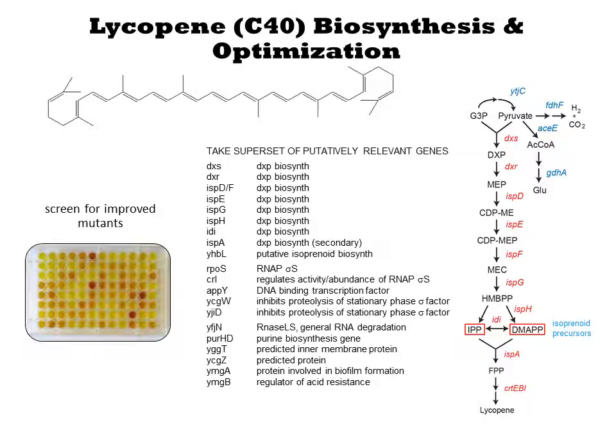From the MAGE library, they screened individual colonies for increased pigment production. Lycopene is a convenient target in this study because it is a chromophore, and its production can be read out by just looking at the color intensity of a colony. However, most chemicals we produce do not have this property and are more difficult to screen. When the phenotype in question is readily screenable, MAGE is an excellent choice for optimization.